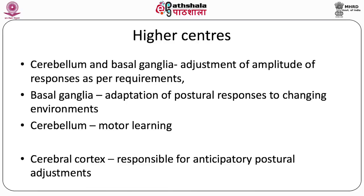A copy of the motor plan is sent to the sensory centers that receive proprioceptive information. Once the motion is executed, proprioceptors sense the movement and the body's relative position, sending this back to the sensory centers. The sensory information from the periphery is matched with the motor plan copy, allowing detection of any error between what was supposed to happen and what actually happened, enabling modification of output in subsequent cycles.